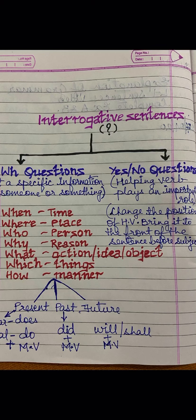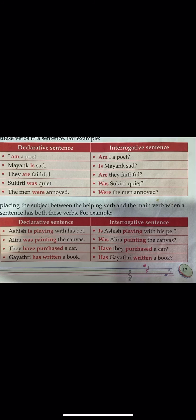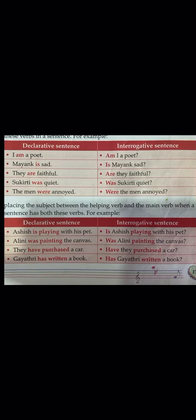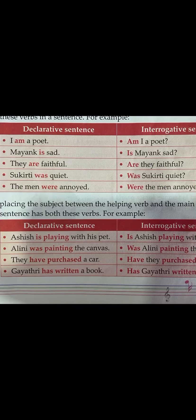Let's see how to form YES or NO questions by looking at this table. 'I am a poet' changes to 'Am I a poet?' — the helping verb is brought to the front. 'Mayank is sad' becomes 'Is Mayank sad?' 'They are faithful' becomes 'Are they faithful?' 'Sukriti was quiet' becomes 'Was Sukriti quiet?' 'The men were annoyed' becomes 'Were the men annoyed?' This is how you form YES or NO questions by moving the helping verb to the front.